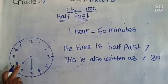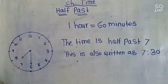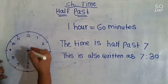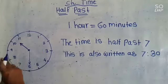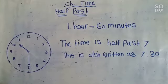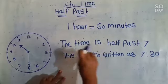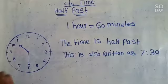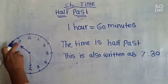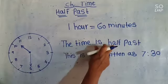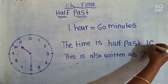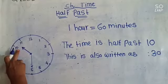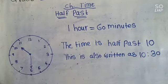Now in this chart the time is half past 7, or 7:30 minutes. Let's take another example. The minute hand is on 6 and the hour hand is in between 10 and 11. Now tell me children, what time is it? The time is half past 10, and this is also written as 10:30.